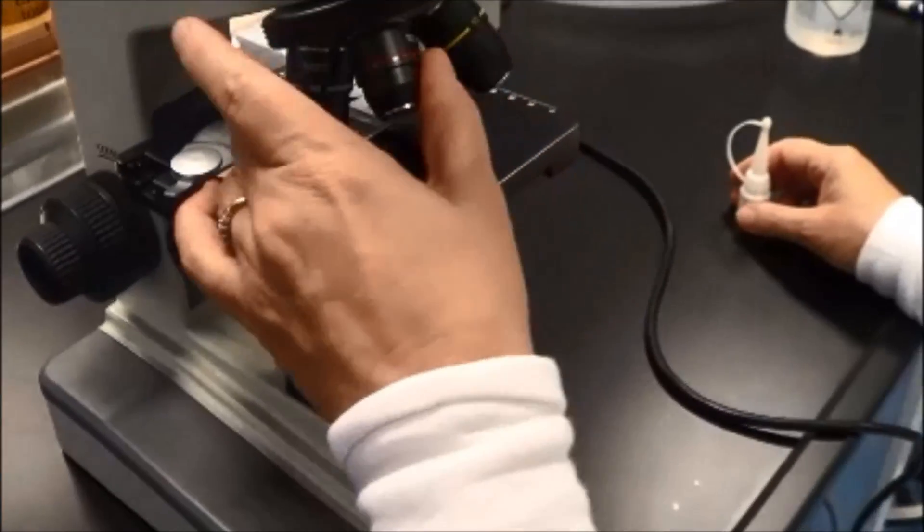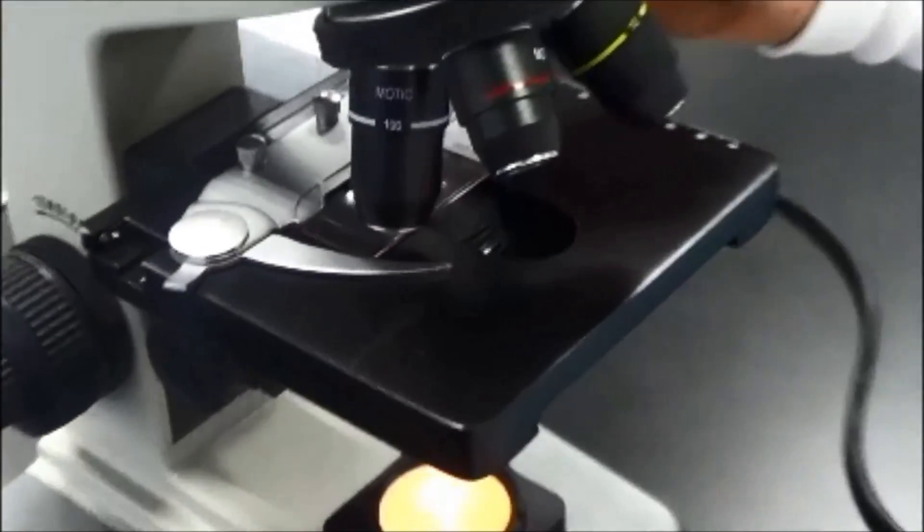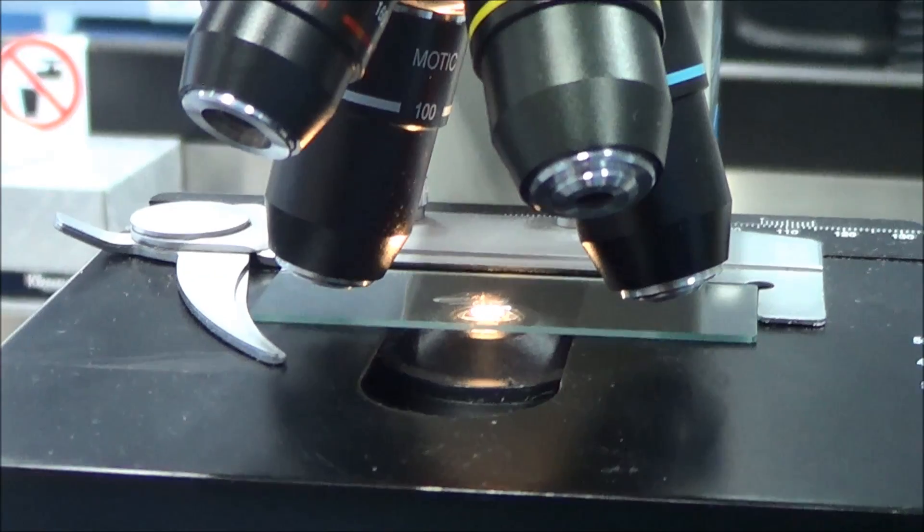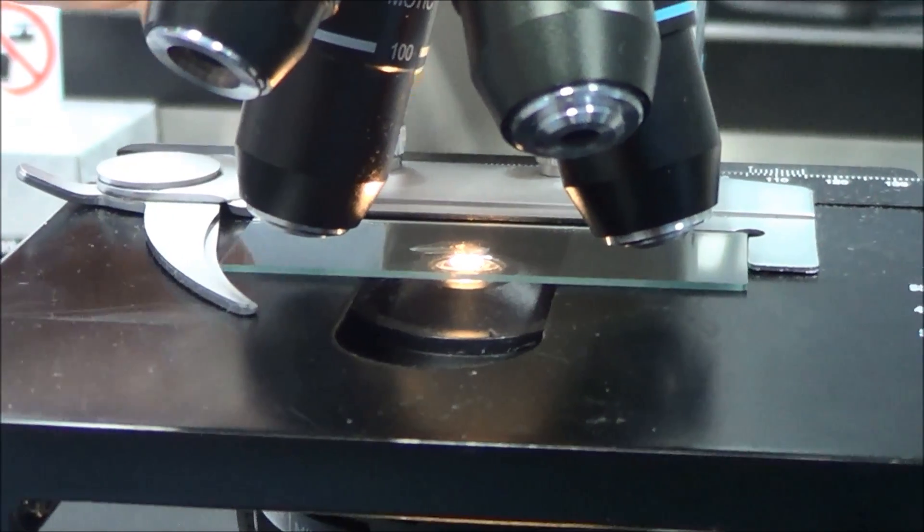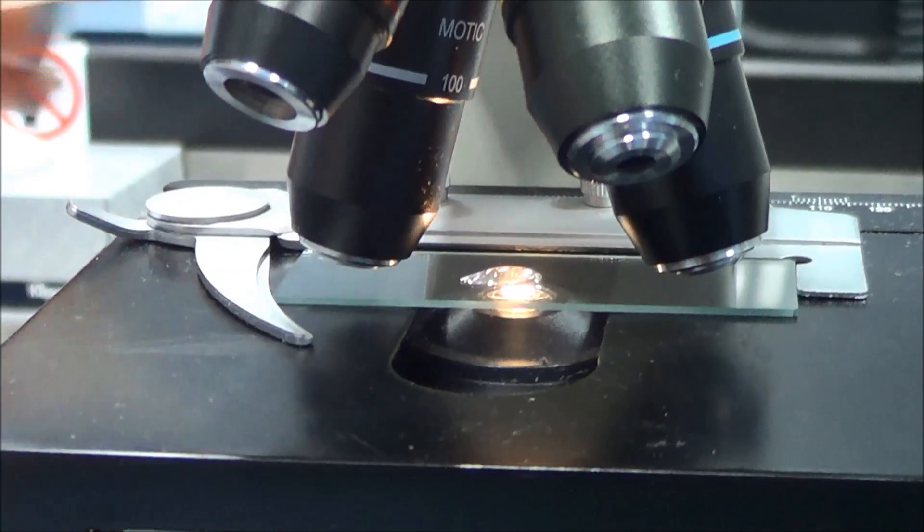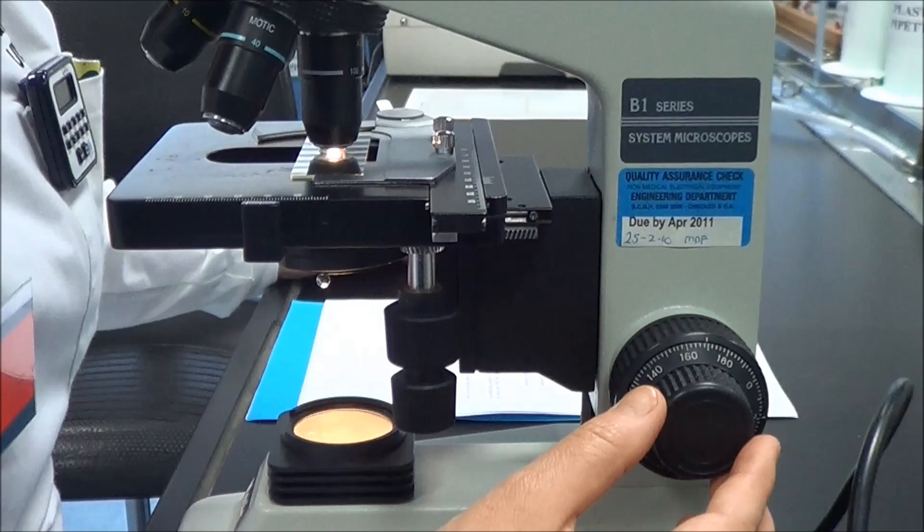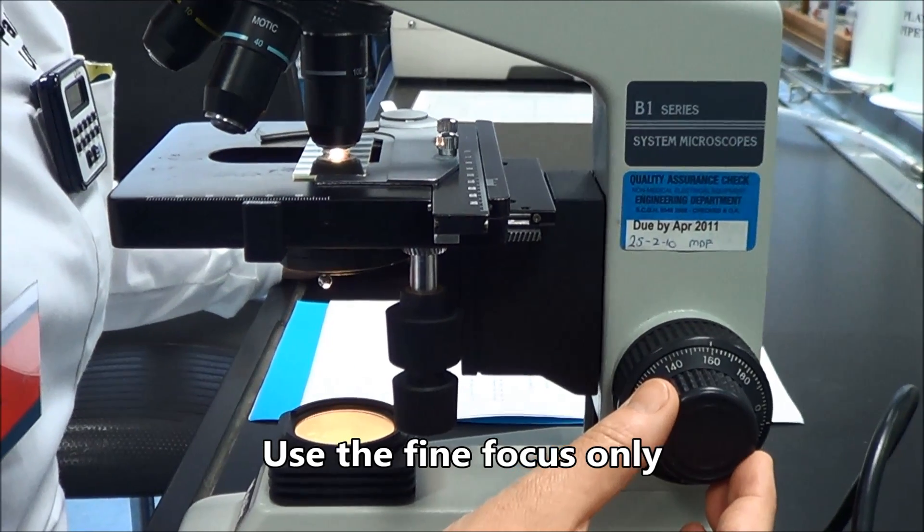To use the 100x lens, swivel the turret so that the slide is between the 40x and the 100x objectives. Place a drop of immersion oil on the circle of light on the slide and swivel the 100x lens into position so that it is in contact with the oil. Refocus using the fine focus only.